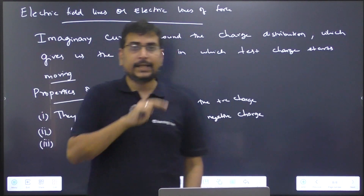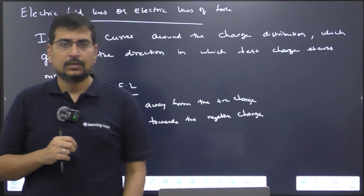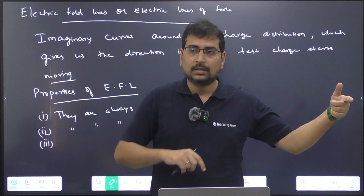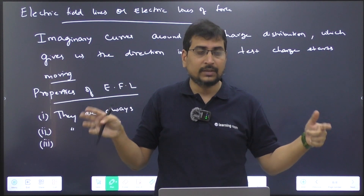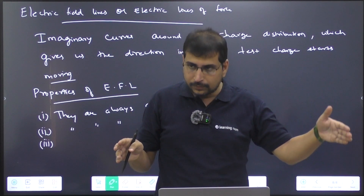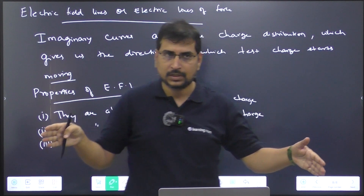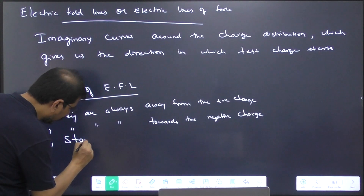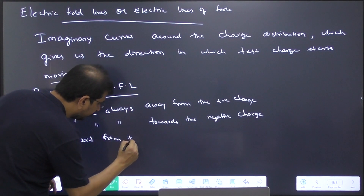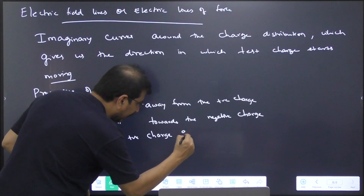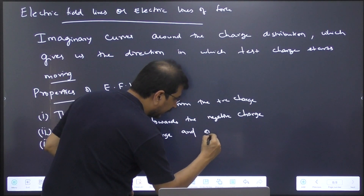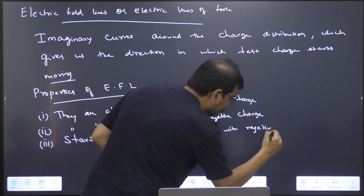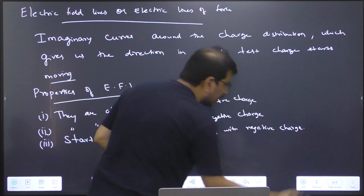When you have a system of unlike charges, the field lines start from the positive charge and end at the negative charge. They do not form a closed loop. They start from the positive charge and end with the negative charge.